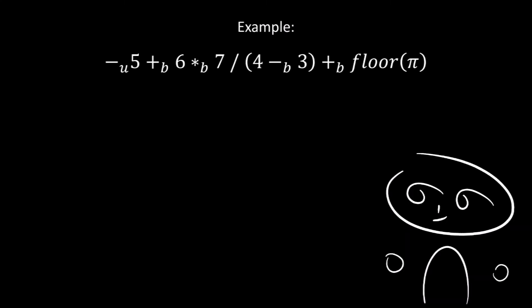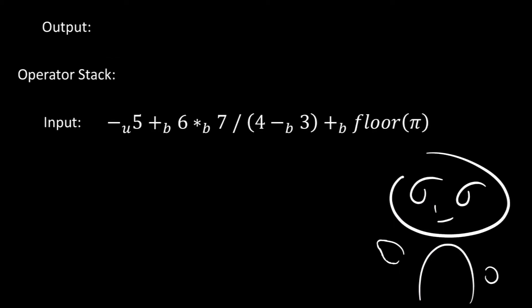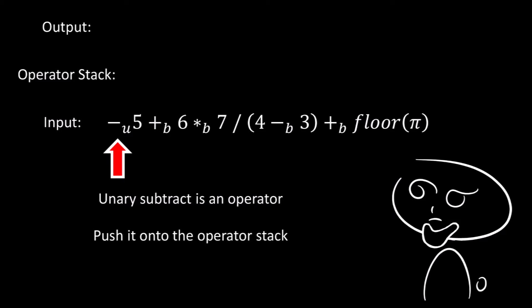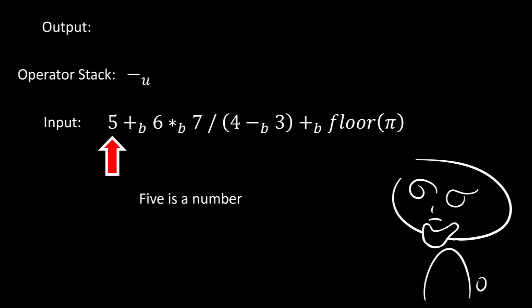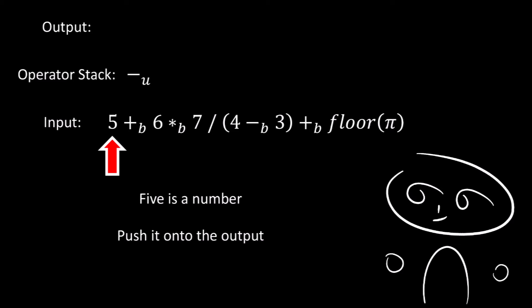Here we have an example — an equation written in infix notation that we want to convert to reverse Polish notation. The operators have been denoted as unary and binary where appropriate to make this unambiguous. We have an output, an operator stack, and an input. The output and operator stack both start empty. We start reading the infix notation from the left, and the first thing we read is a unary subtract. Since this is an operator, we push it into the operator stack. The next thing we read is a 5, and since 5 is a number, we push it into the output.